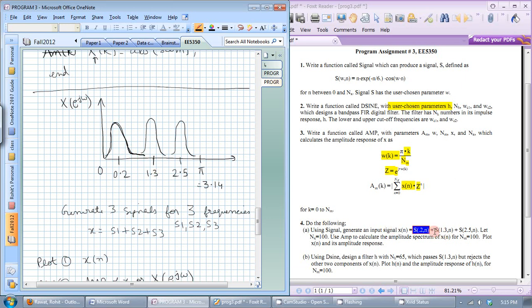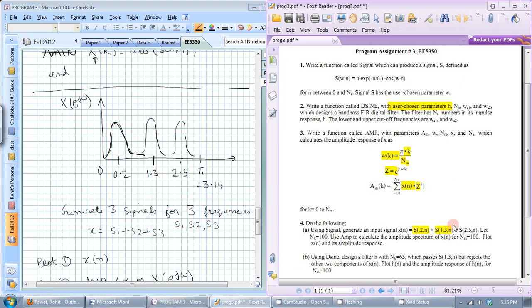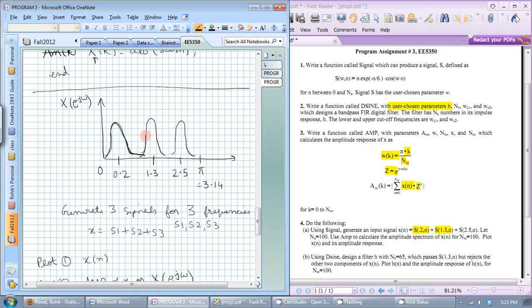It will produce a signal that has a Fourier transform or DTFT like that. Then you call the function again with a different omega, this time it will produce a function that has this peak in the Fourier transform and then again a third signal. When you add them together the combined signals should have a Fourier transform that looks like this.